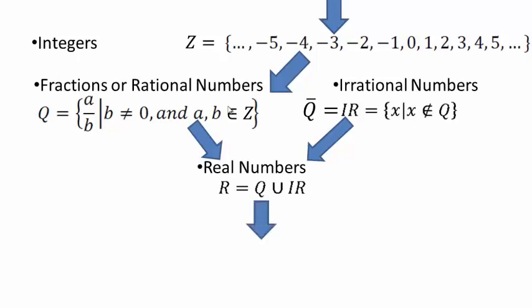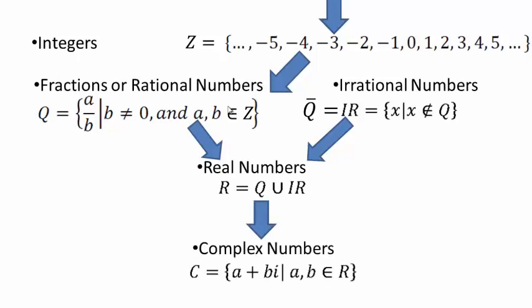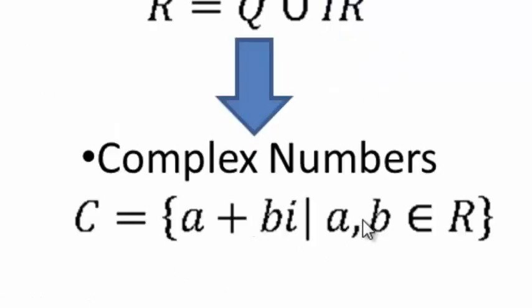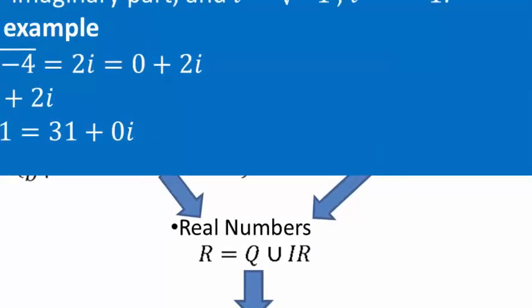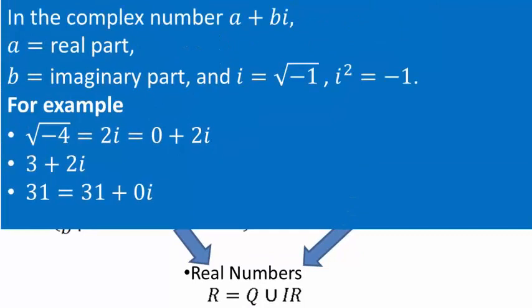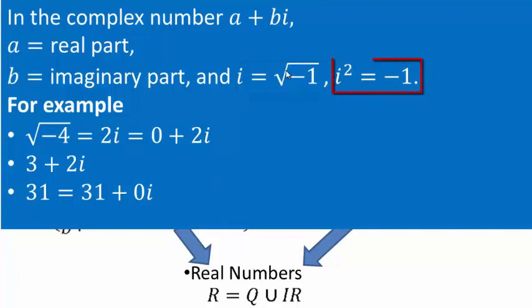Now, the new set of numbers — we're going to call them complex numbers. Just having real numbers was not enough, and so people formed a set of numbers called complex numbers, which are of the type A plus Bi, where A and B belong to the real numbers. A is called the real part, and B is called the imaginary part. The i is the value of square root of negative 1 — or you can think of i as a number whose square is negative 1. No real number squared gives a negative value, so i is an imaginary number.